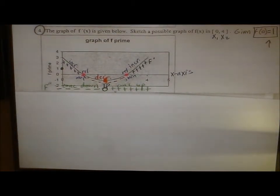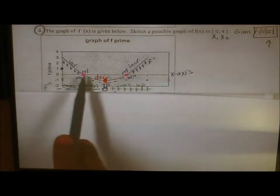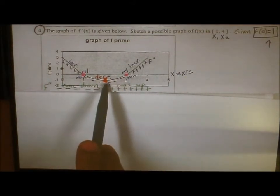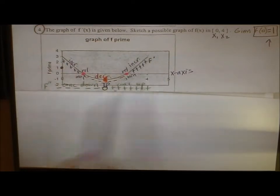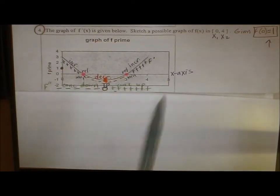So the more x-intercepts you have, and the more relative extrema you have for f prime, the more complex it's going to be to go from f prime back to f.